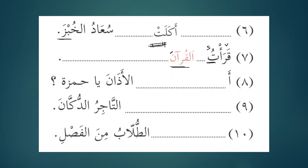Al-adhana ya Hamzatu — did you hear the adhan? In sami'ta, 'ta' is the subject and sami'a is the verb. Al-tajiru al-dukkana — fataha al-tajiru al-dukkana — the merchant opened the shop. Al-tullabu min al-fasli — kharaja al-tullabu min al-fasli — the students went out of the classroom.